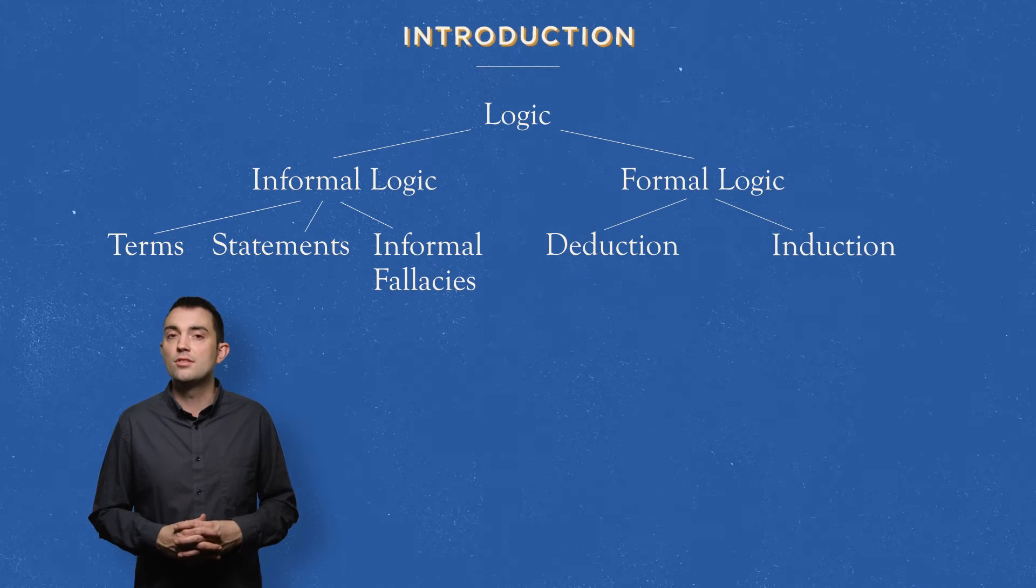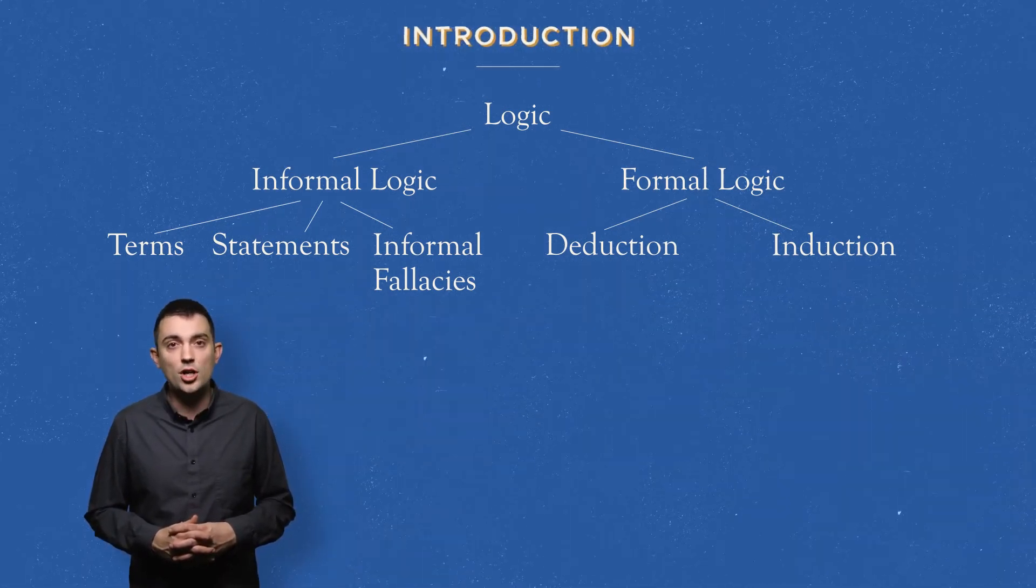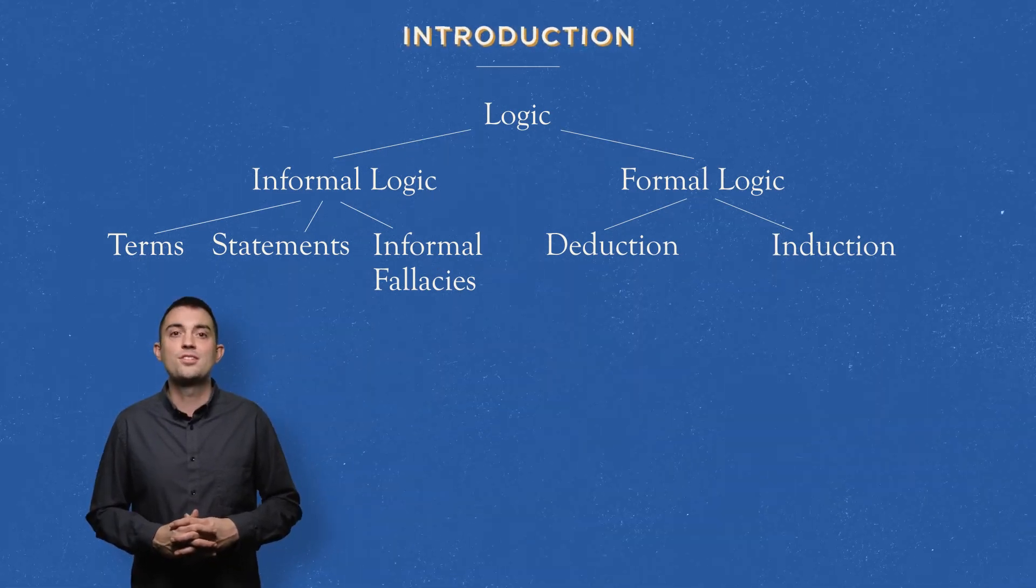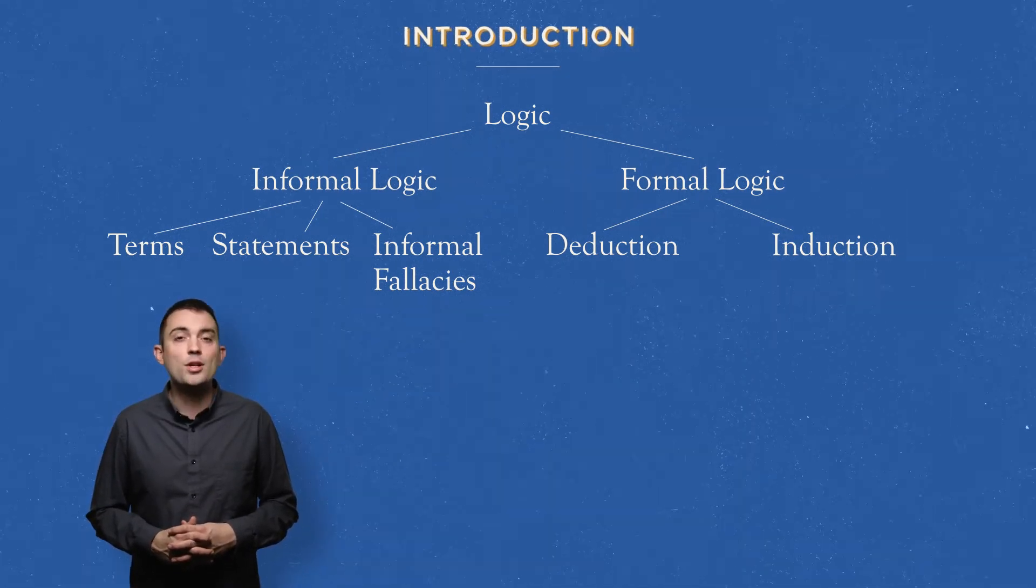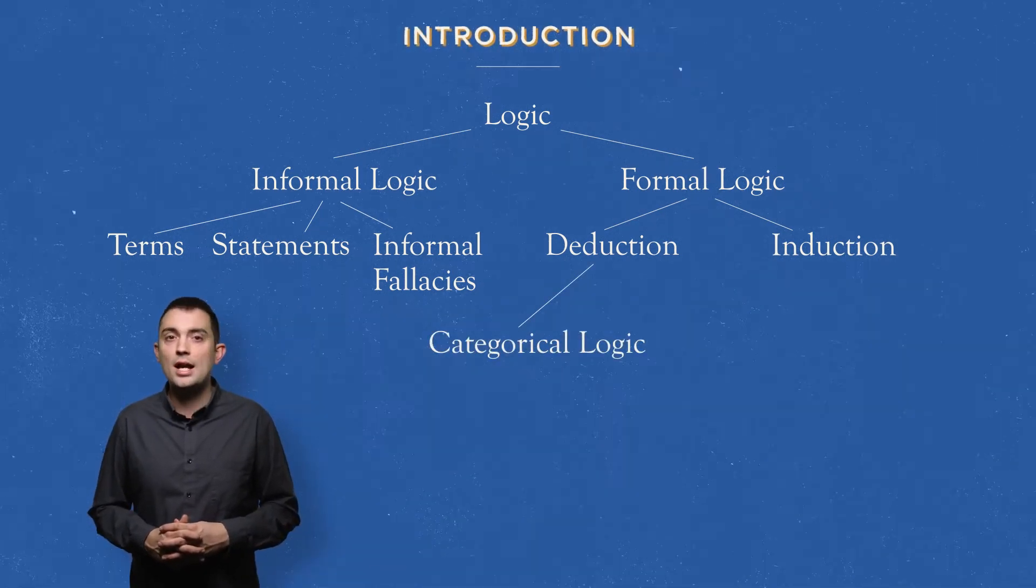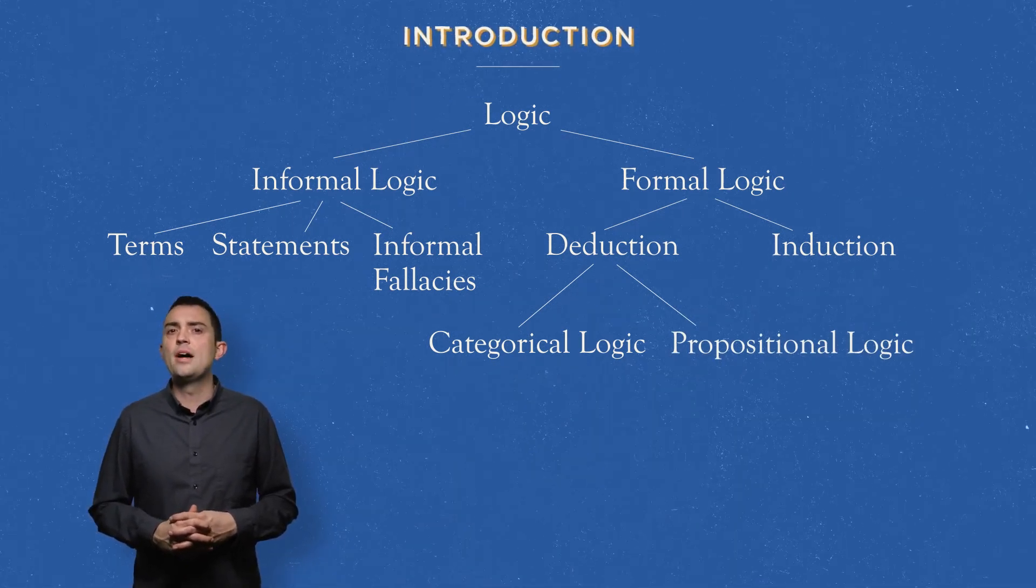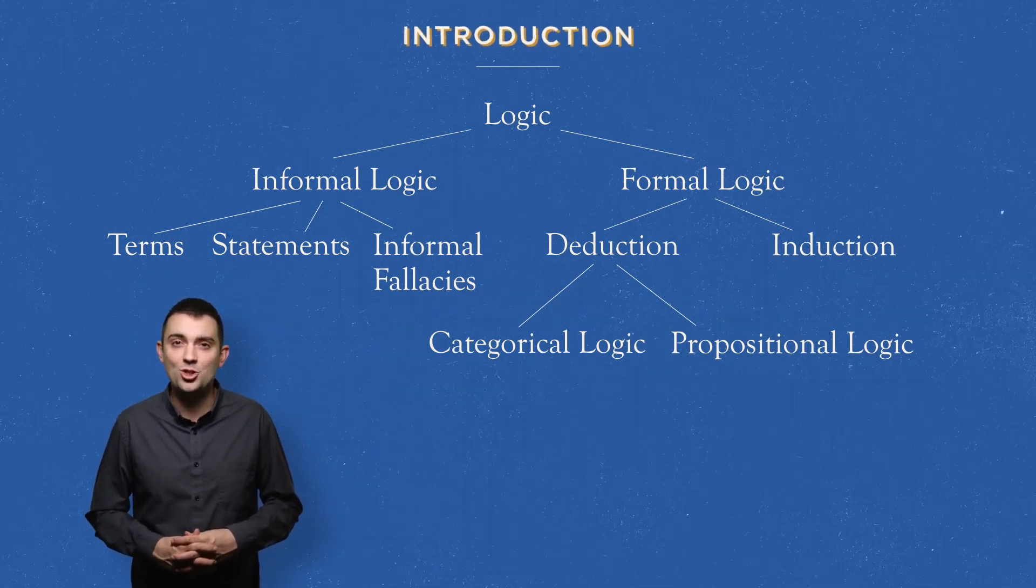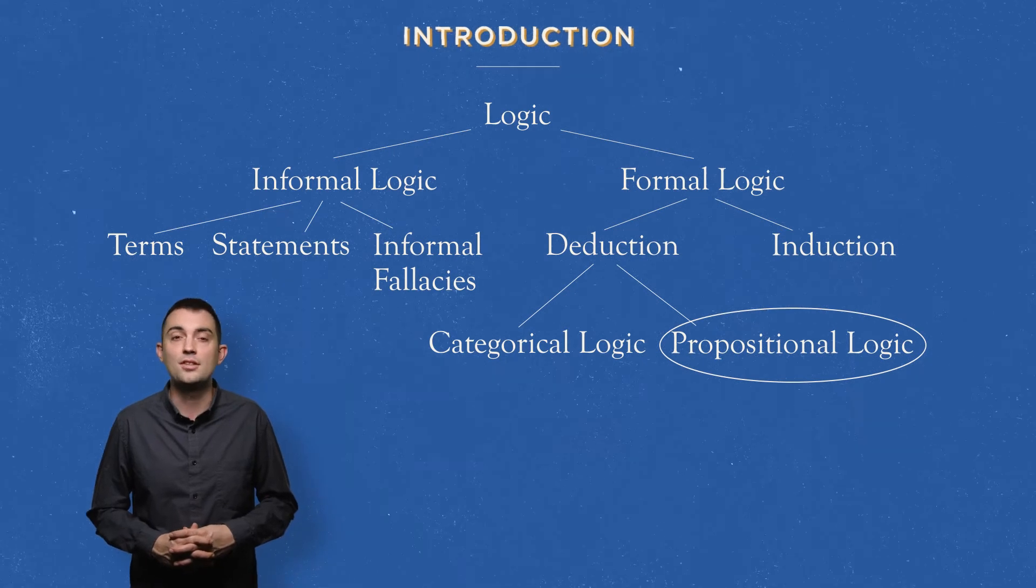Inductive arguments are arguments of likelihood or probability based on experience. Deductive arguments are arguments of certainty based upon axioms, which are statements assumed to be true. Deductive arguments themselves are broken down into categorical and propositional logic. Categorical logic is what we learned about in introductory logic. And now, at last, we're at the other branch. We're going to learn all about propositional logic in this textbook and this video series.